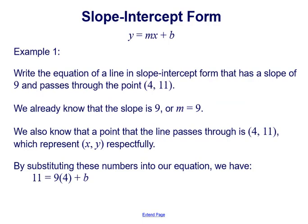In this first example, we're told to write the equation of a line in slope-intercept form that has a slope of 9 and passes through the point (4, 11). We already know the slope is 9, or m equals 9, and the point (4, 11) represents x and y respectively. By substituting these numbers into y equals mx plus b, it gives us 11 equals 9 times 4 plus b.